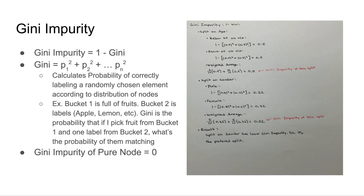For the split on gender, in the male section we have a Gini impurity of 0.32, and for females we also have a Gini impurity of 0.32, so the weighted average of the Gini impurities is 0.32. Now, for information gain we want a higher value, but for Gini impurity we want a lower value, because the Gini impurity of a pure or homogeneous node is 0. Based on our results, gender has a lower Gini impurity, making it the preferred split.